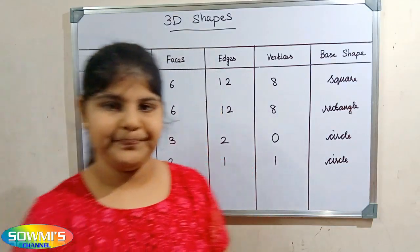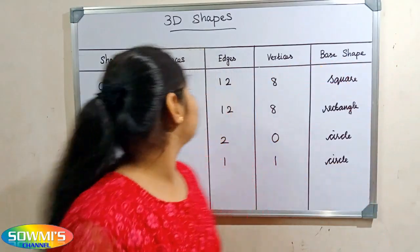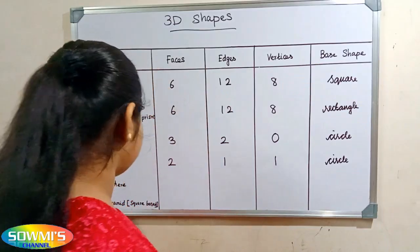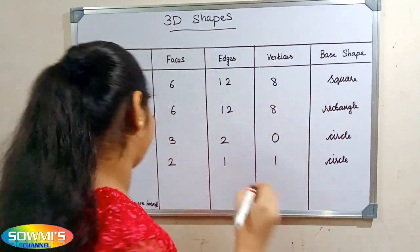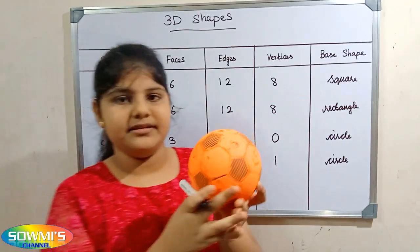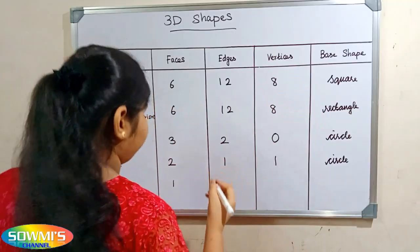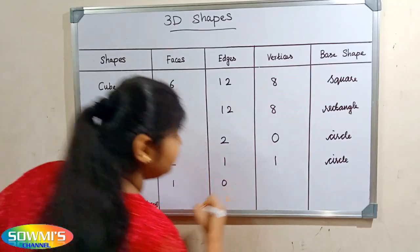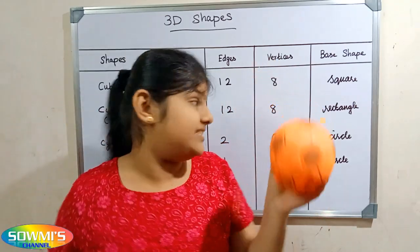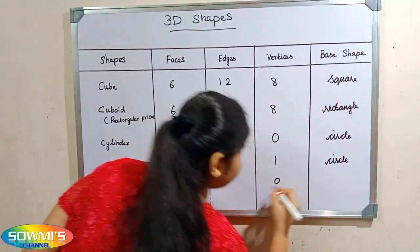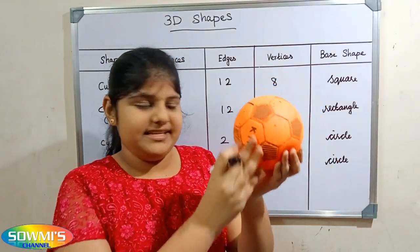Next we will see the sphere. There is only one curved face in a sphere. There are no edges in a sphere. There are no vertices in a sphere. The base shape of sphere is circle.